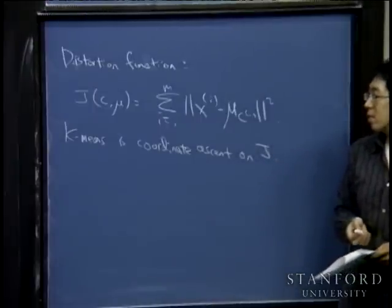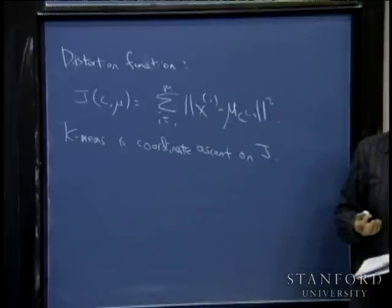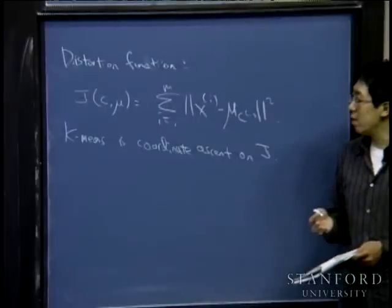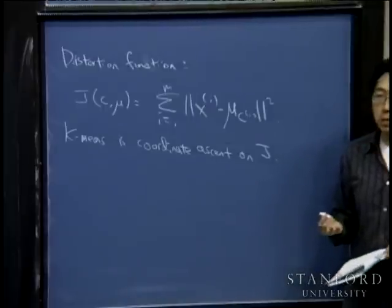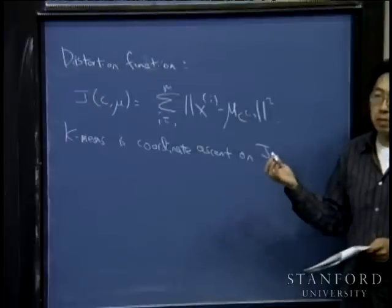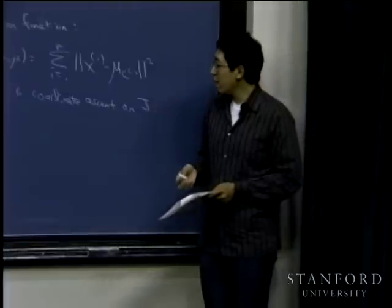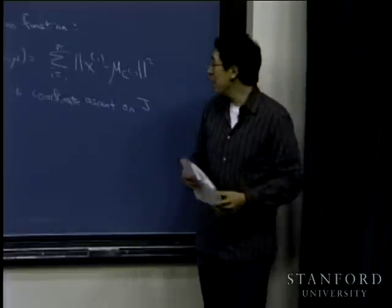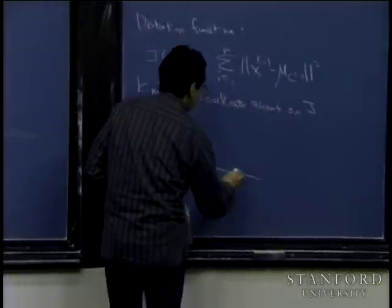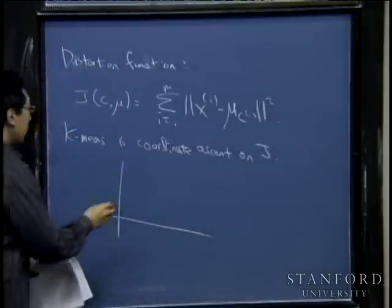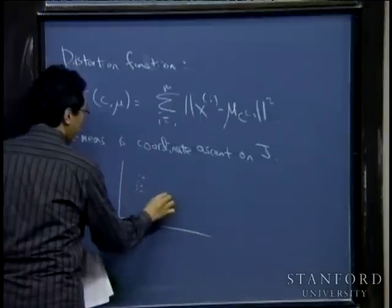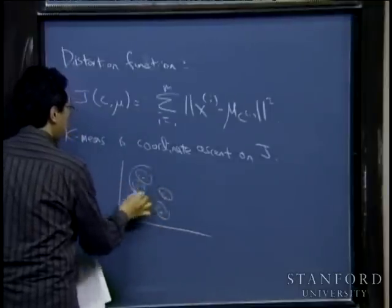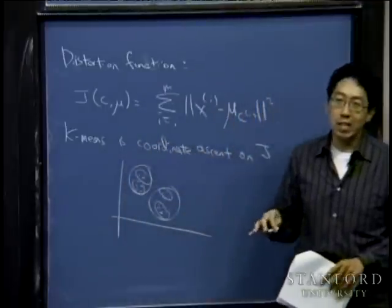How do you choose the number of clusters? In the vast majority of cases, people just manually pick a number of clusters — try a few different values and pick the one that seems to work best. The number of clusters is just one parameter and usually not very hard to choose. There are automatic methods, but I typically just pick manually, because for many clustering problems the true number of clusters is actually ambiguous. For example, a given dataset might look like it has four clusters to some people and two to others.